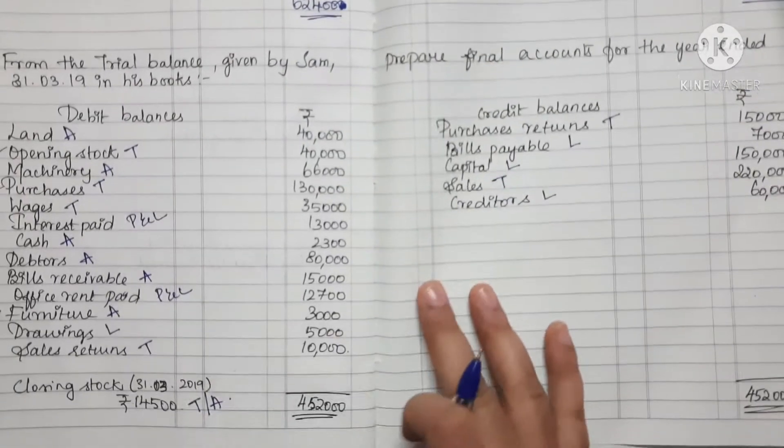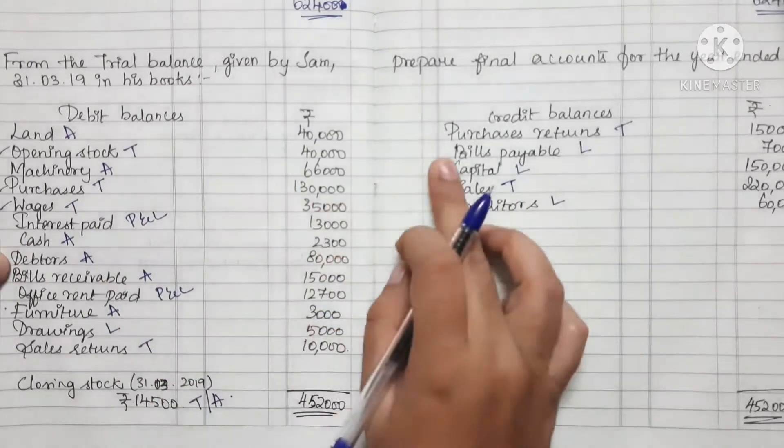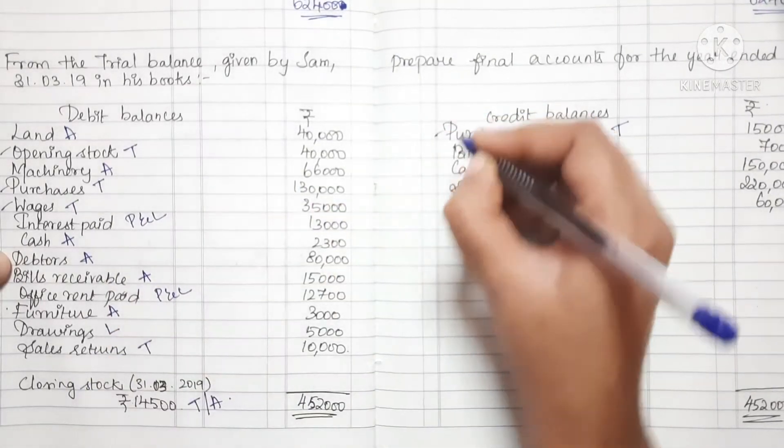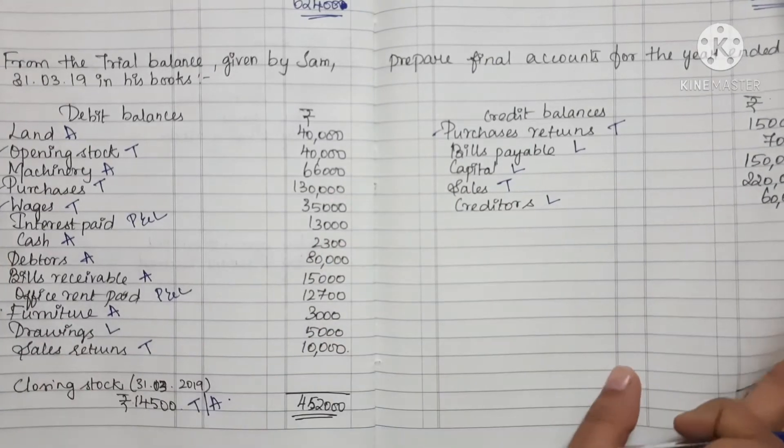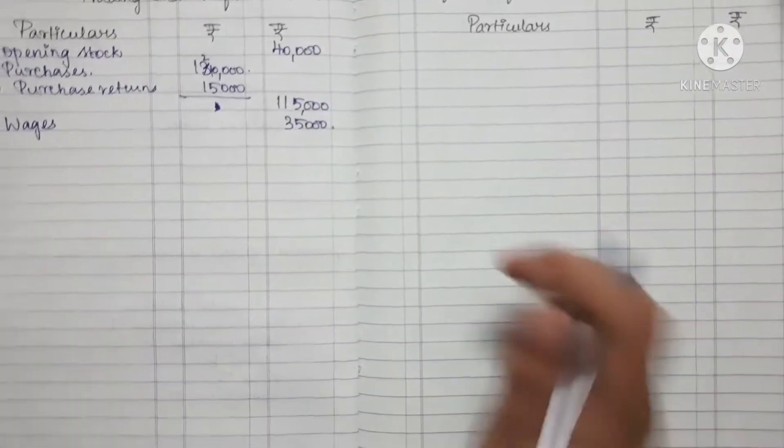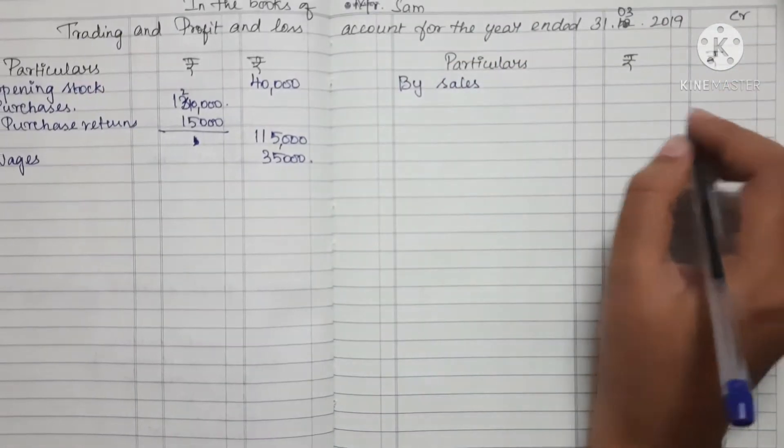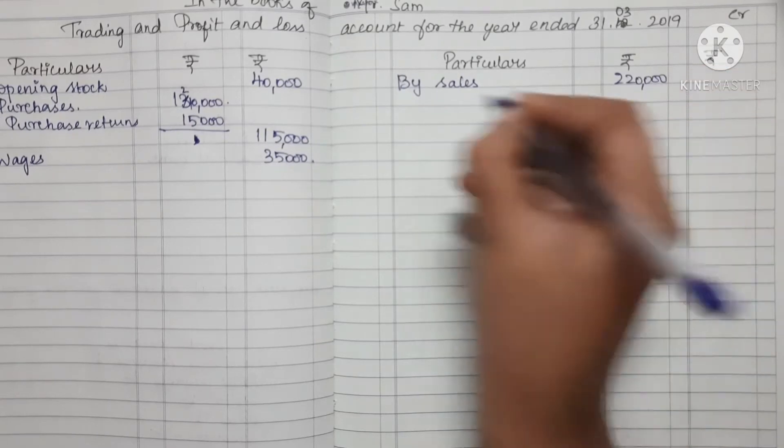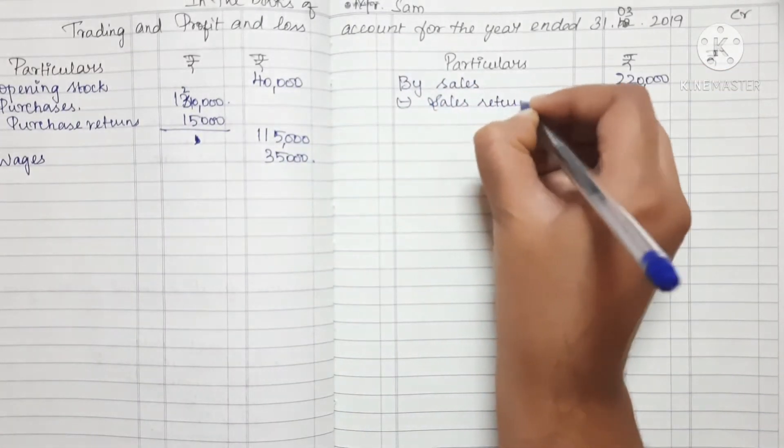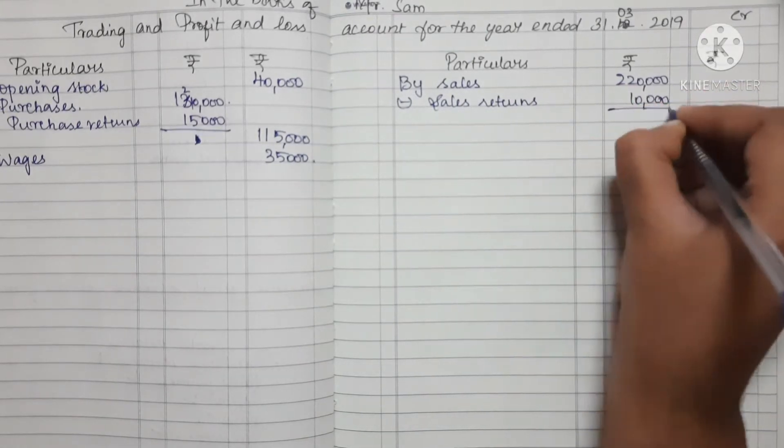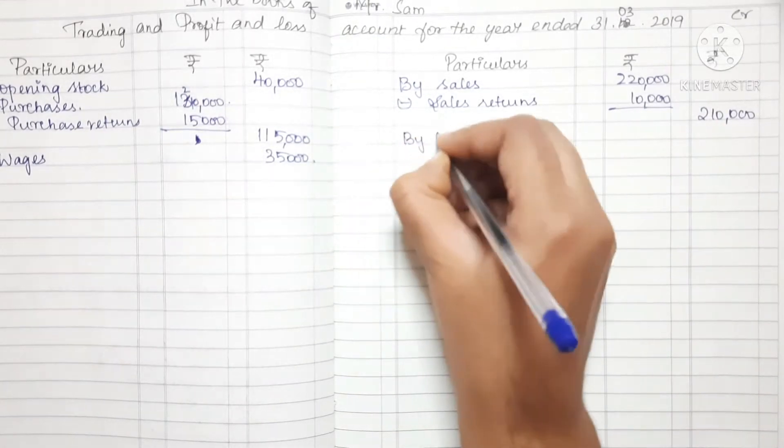On the credit side: Sales. The sales amount is actually 2,20,000, minus sales return of 10,000, so these two minus gives 2,10,000.